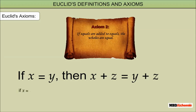Example: if x is equal to 3, and y is equal to 3, then x is equal to y. Also, x plus 5 is equal to y plus 5.